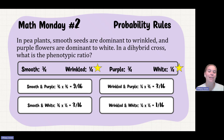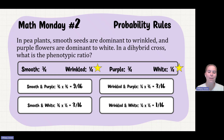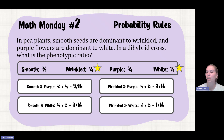So my ratio is going to be nine to three to three to one. To verify that you did your math correctly, add up your numerators and make sure the sum equals your denominator. Nine plus three is 12, plus three is 15, plus one is 16 — so I know I've done my math correctly.